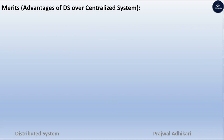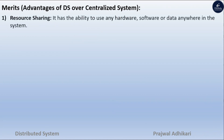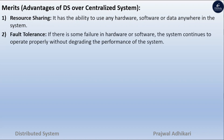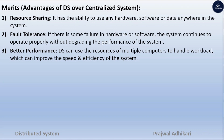Advantages of distributed systems over centralized systems. Resource sharing: Distributed systems have the ability to use any hardware, software, or data anywhere in the system. Fault tolerance: If there is some failure in the hardware or software, the system continues to operate properly without degrading the performance of the system. Better performance: Distributed systems can use the resources of multiple computers to handle workloads, which can improve the speed and efficiency of the system.